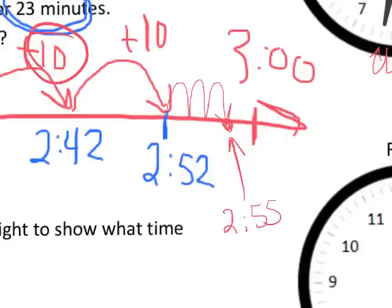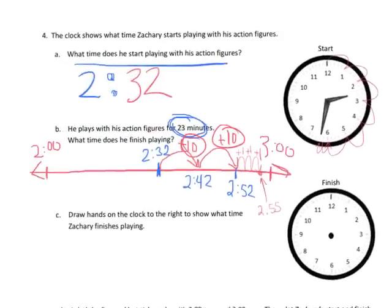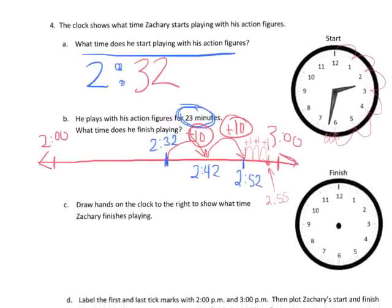So there's our 20 minutes up here plus our extra 3 minutes — plus 1, plus 1, plus 1 — putting us at 2:55. We could have done something that looked a lot like a traditional addition problem, but I'm pretty happy with showing it on a number line to let students see there's a variety of different ways to solve a problem. Now question C asks us to model that on our analog clock.